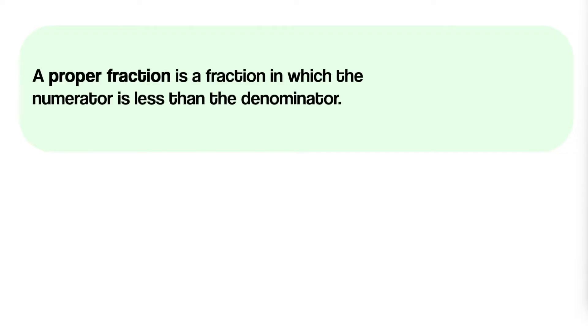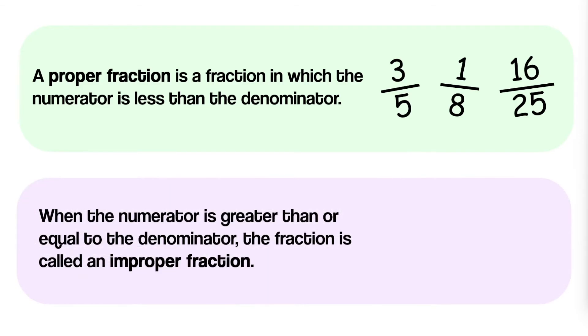Recall that a proper fraction is a fraction in which the numerator is less than the denominator, such as three-fifths, one-eighth, and sixteen-twenty-fifths. When the numerator is greater than or equal to the denominator, the fraction is called an improper fraction.